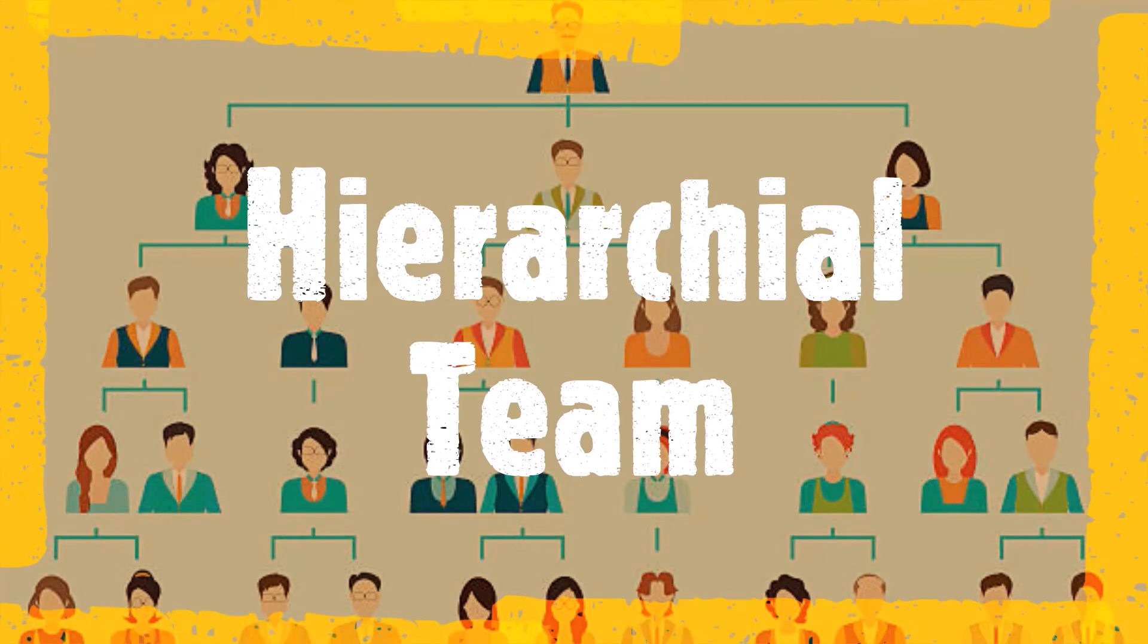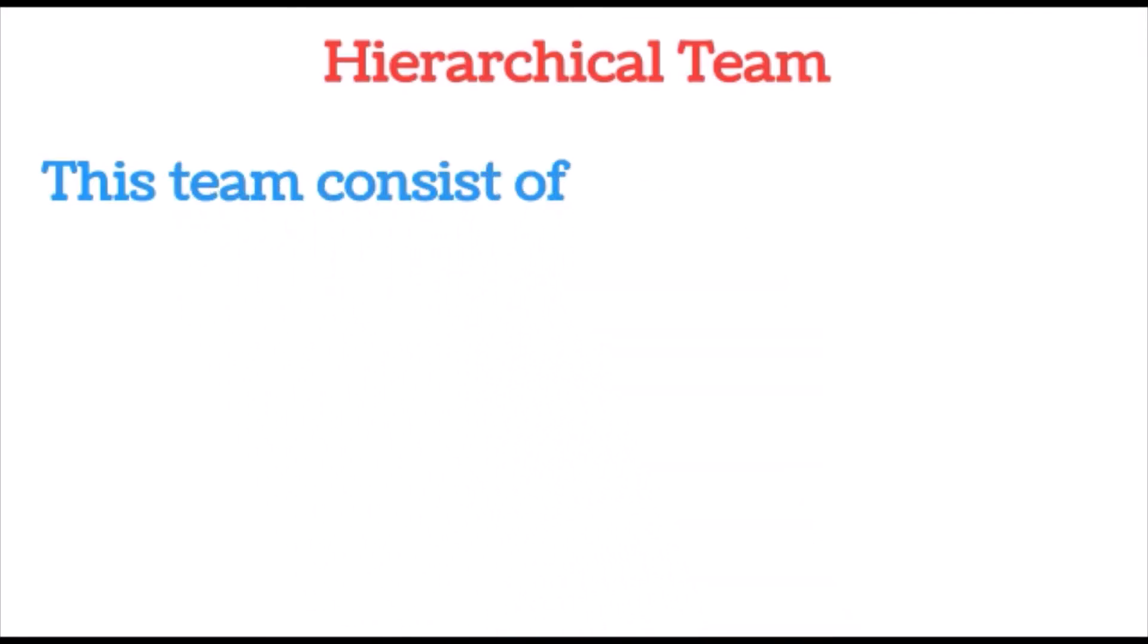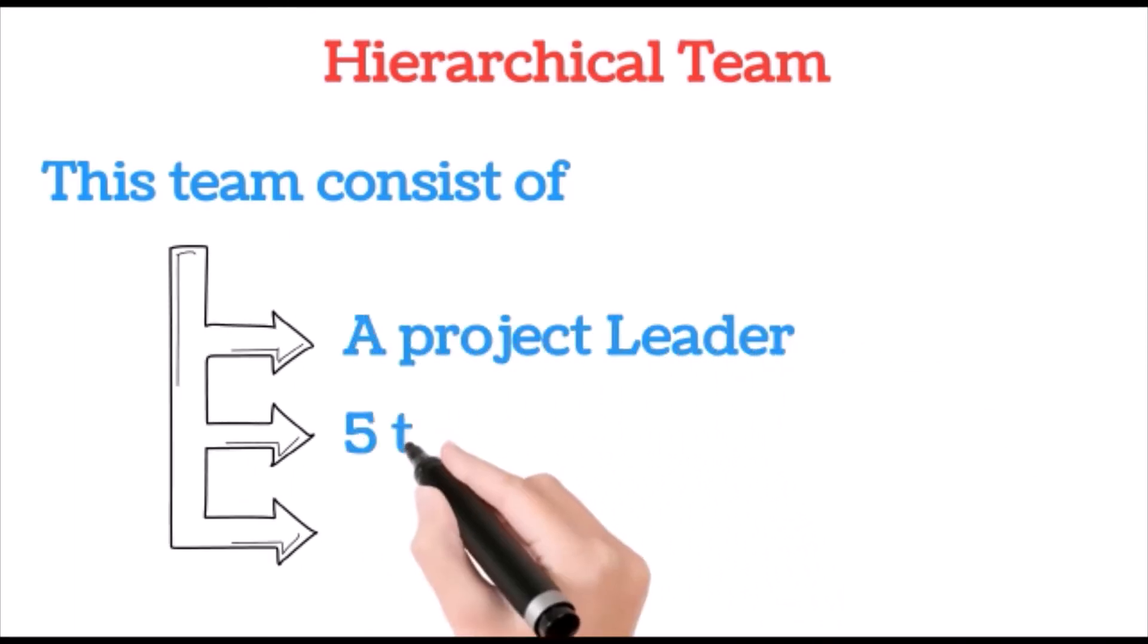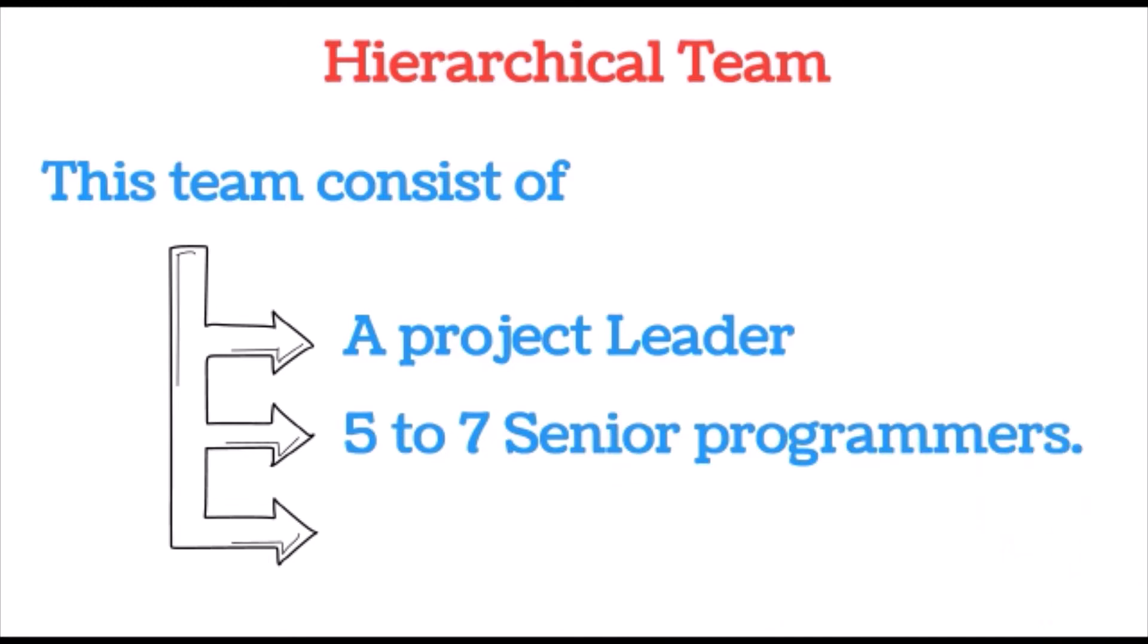Lastly we are going to see about hierarchical team. This team consists of a major project leader, five to seven senior programmers, and five to seven junior programmers.